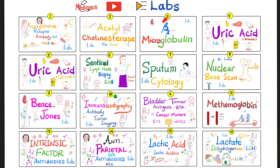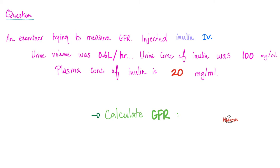Please watch the videos in this playlist in order. Let's start by answering the question of the previous video. An examiner is trying to measure glomerular filtration rate and injected inulin intravenously. The urine volume is 0.6 liters per hour, urine concentration of inulin was 100 milligrams per milliliter, and the plasma concentration of inulin is 20 milligrams per mL. Can we calculate the GFR?